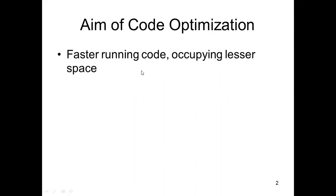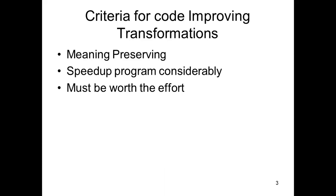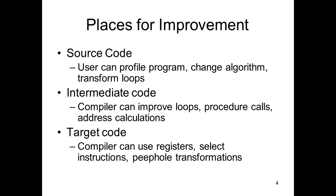The aim of the code optimizer is to produce faster running code and occupy the least memory space. When the number of statements are reduced, by default that will produce faster running code and also it takes less memory space. The criteria for code-improving transformations: when we are doing transformations, we have to preserve the meaning of the source program, speed up the program, and the transformation must be worthwhile.